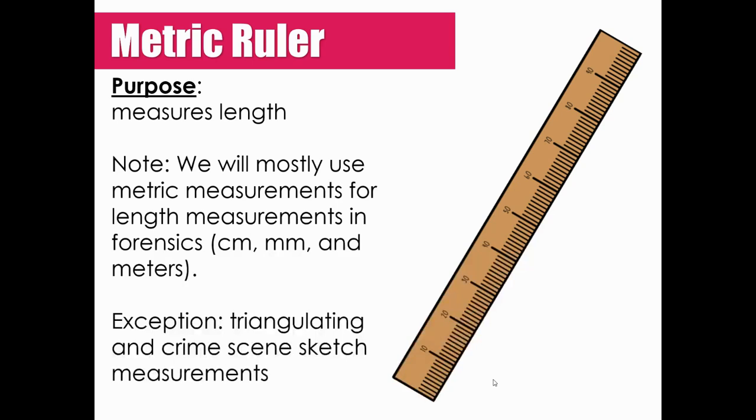We're going to use rulers quite a bit this year in forensics. So we're going to use a metric ruler most of the time. The metric ruler measures length. We're going to use a variety of different rulers. We'll have some larger meter sticks, and then we'll have some smaller ones. Like when we're talking about blood spatter, and you have smaller blood drops, and you have to measure the diameter of those. We'll use smaller metric rulers. We will mostly use metric measurements for length, like centimeters and millimeters. Occasionally, you'll have to use meters. There is an exception though. So earlier in some of our early lessons for forensics, we're going to talk about a process known as triangulation. We're going to talk about how to sketch a crime scene. And those measurements, we use a standard system of measurements. So we're going to use feet and inches for triangulation and our crime scene sketches. But everything else this year, we'll use the metric system.